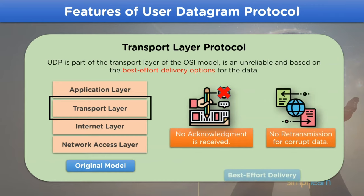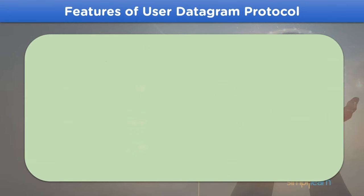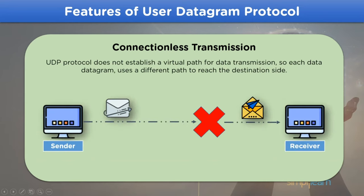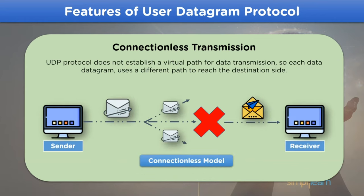It doesn't provide any guarantee that data is transmitted to the receiver side. The second feature represents the mode of connection that UDP establishes for data transmission. The UDP protocol establishes a connectionless path, meaning there is no actual virtual path for the data to be transmitted, so each data packet uses a random path available in the network channel and reaches its destination.